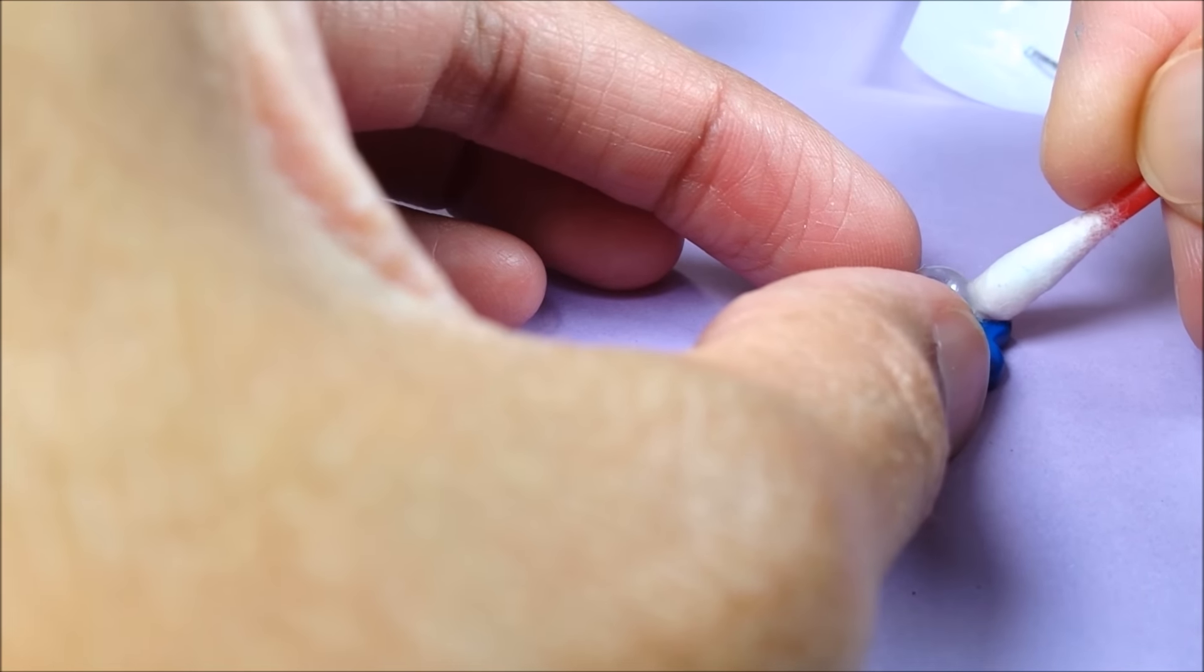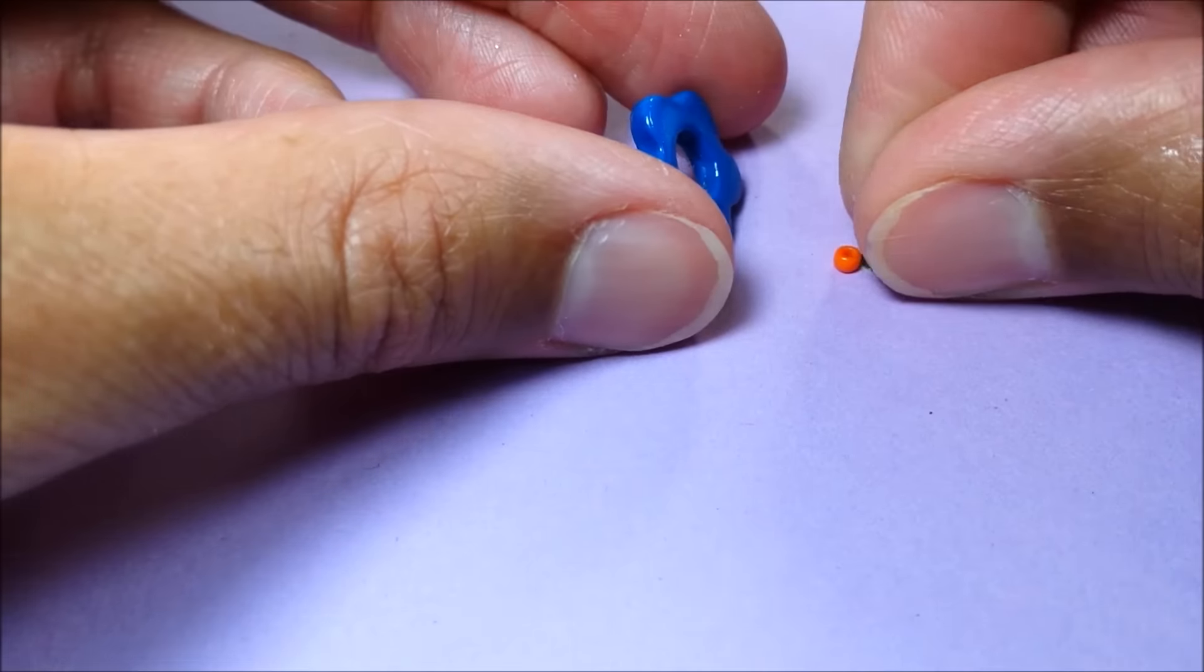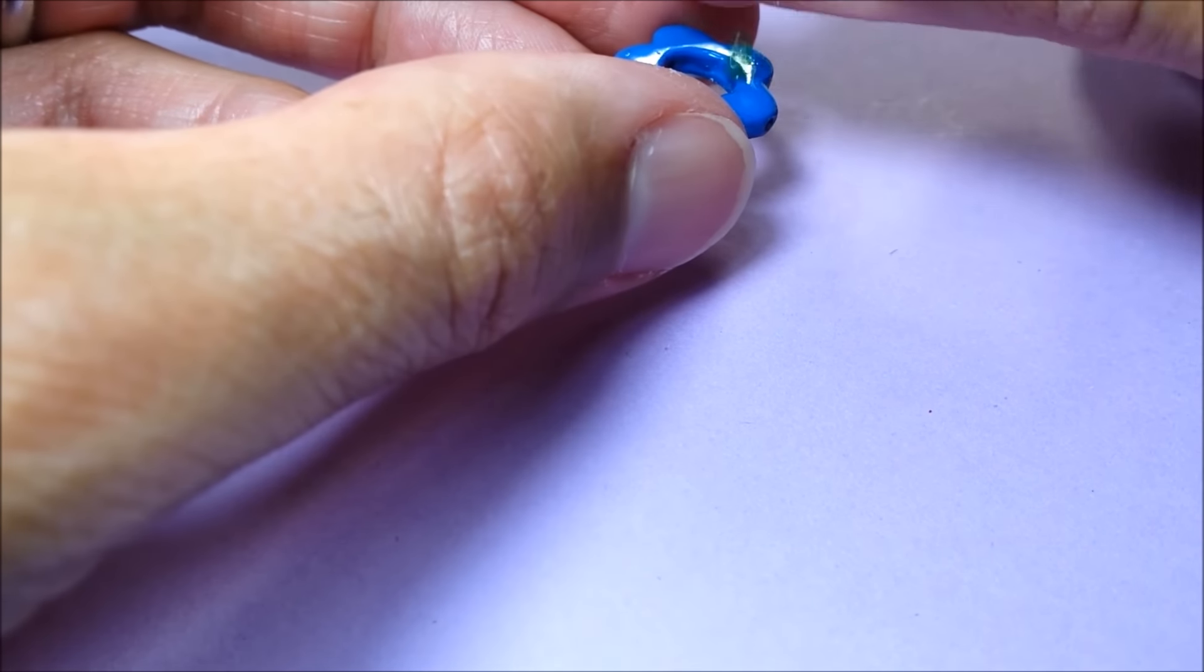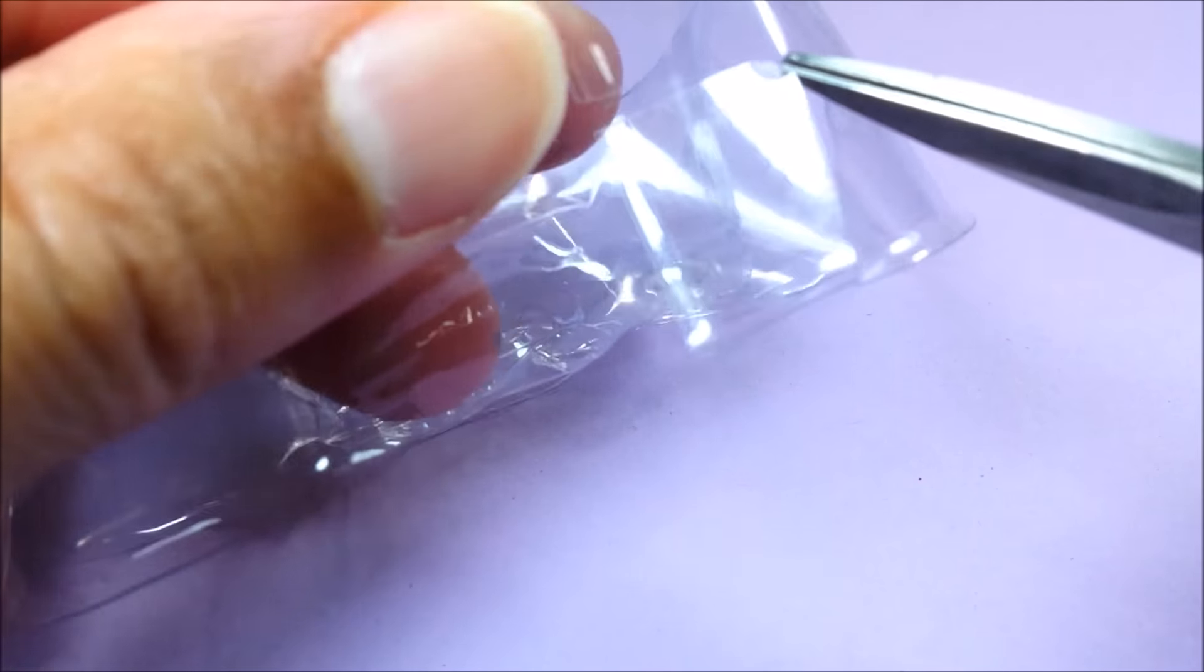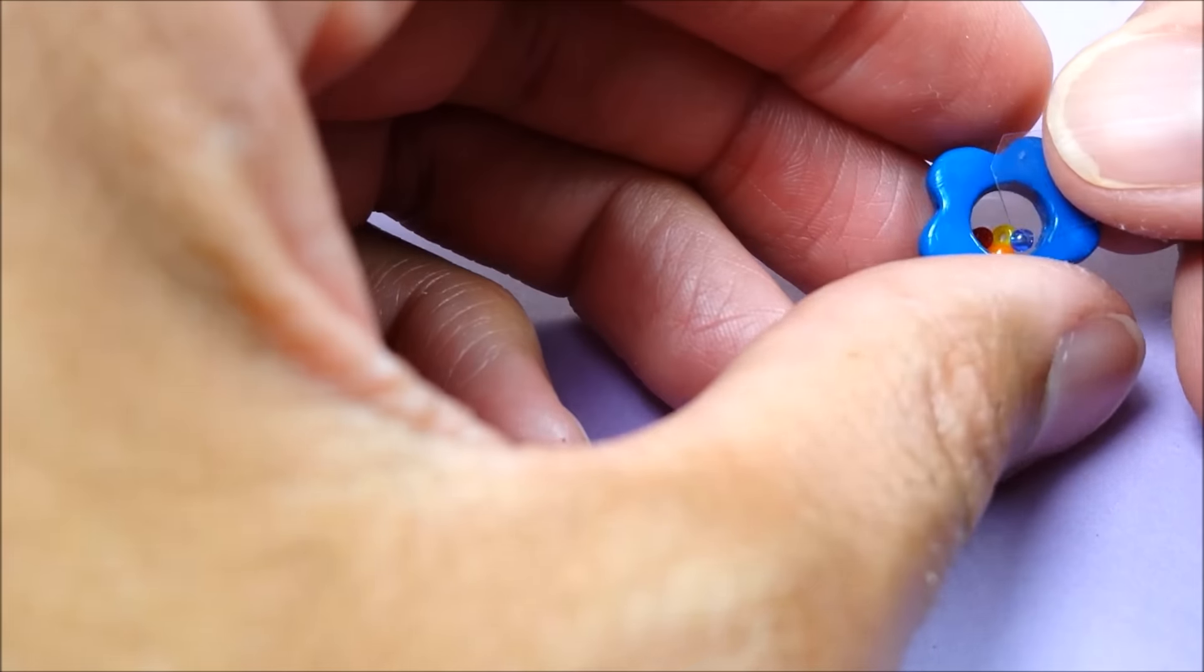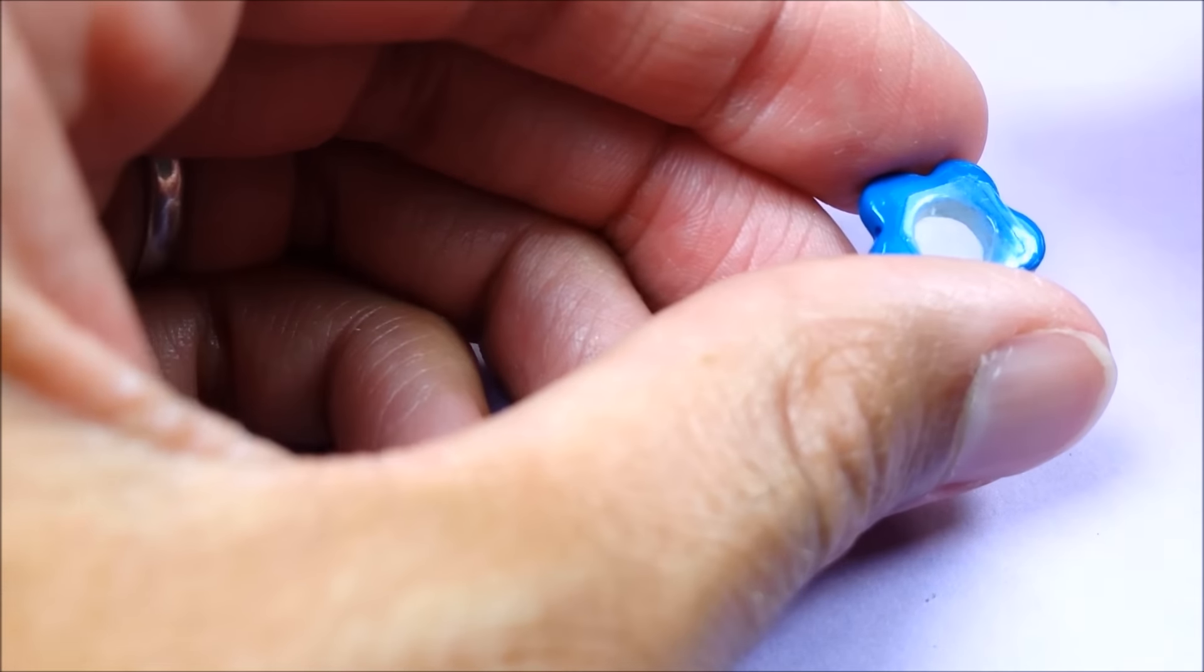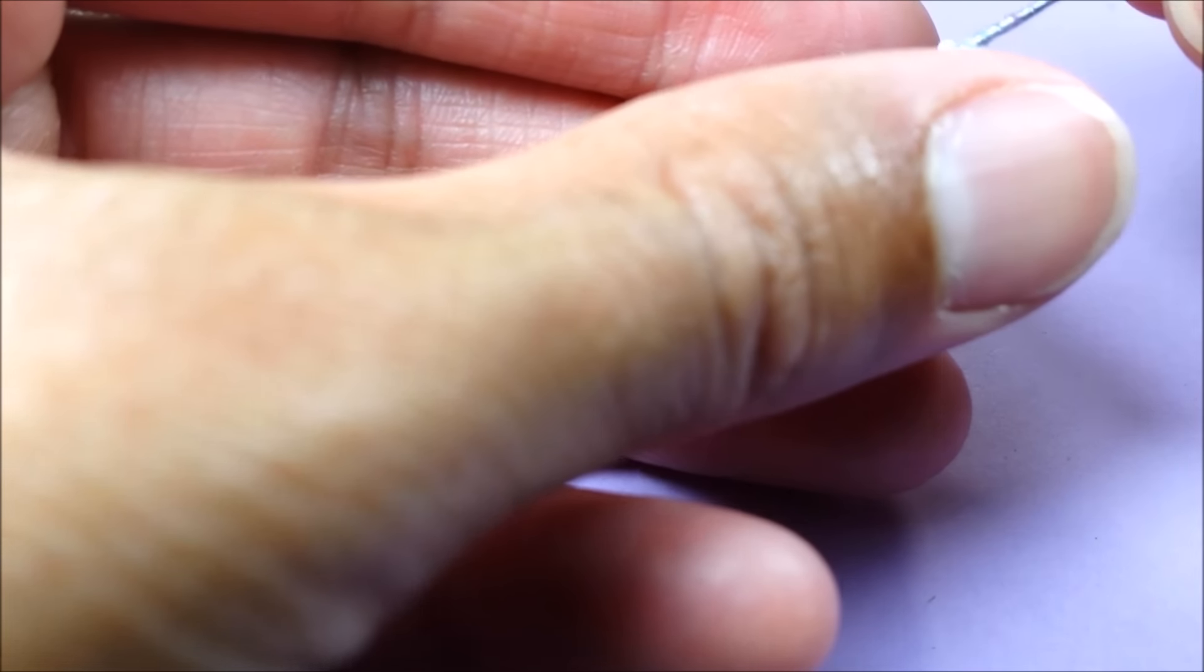When it dries I pop in my tiny little beads. I cut out a bit of clear plastic, just super thin clear plastic, which I can then glue to my bead.